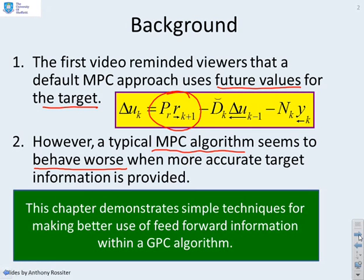This chapter will demonstrate simple techniques for making better use of feedforward information, and it means we need a slight modification to the default GPC algorithm for this to work effectively.